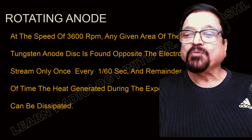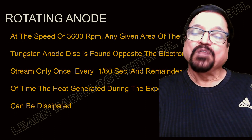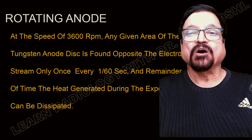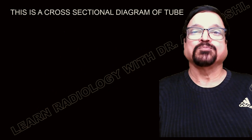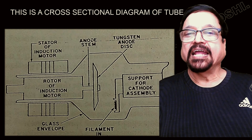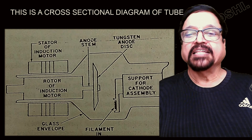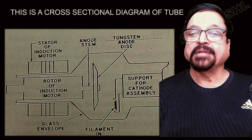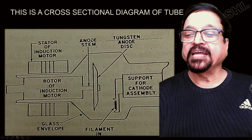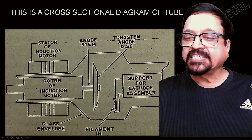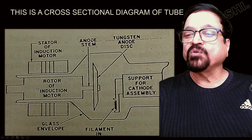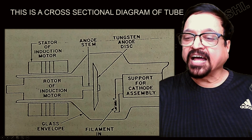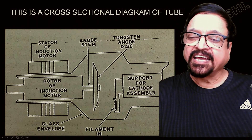Every fraction of a second the heat produced remains at that spot momentarily, and then a different surface of the anode is exposed. Looking at a cross-sectional diagram, you can see the stator of the induction coil, the rotor of the induction motor which rotates the anode at 3600 RPM, and the anode surface which is being exposed. From the cathode, electrons are produced, accelerated, and hit the anode surface — with a different surface presented each time.